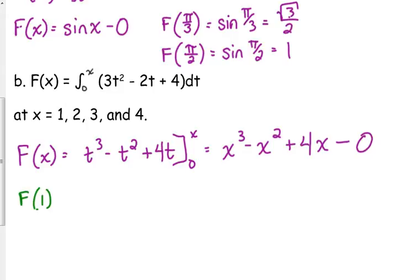So F of 1 is simply 1 cubed minus 1 squared plus 4 times 1. So 1 minus 1 is 0. 4 times 1 is 4.